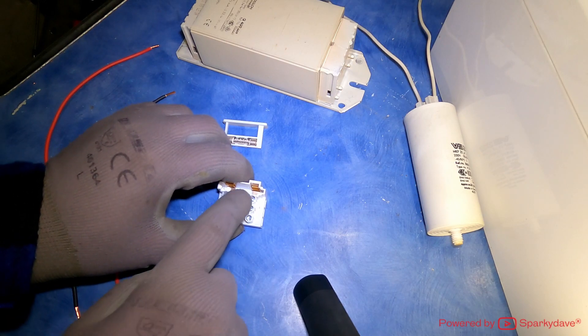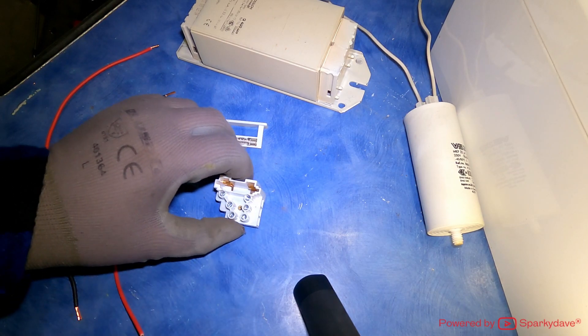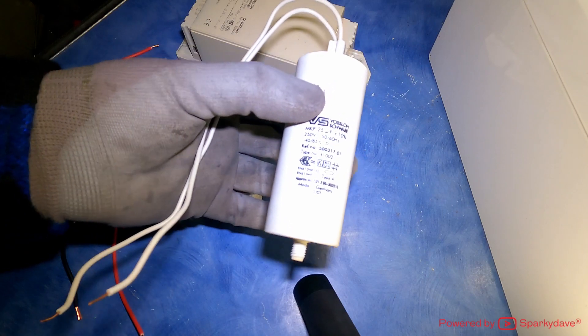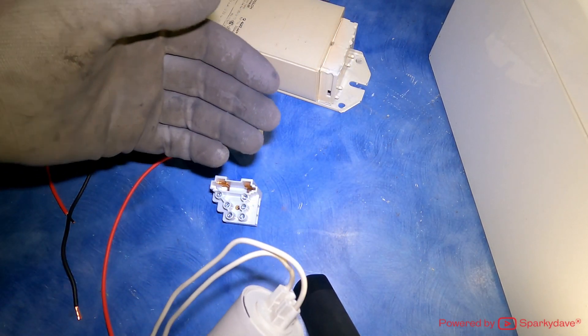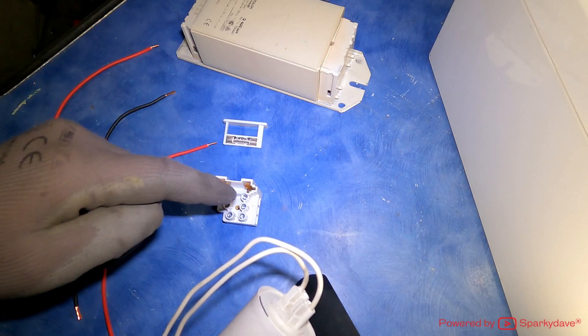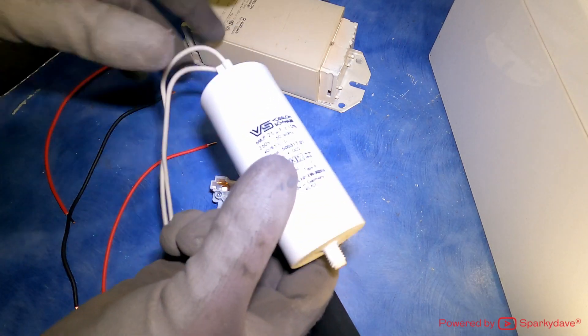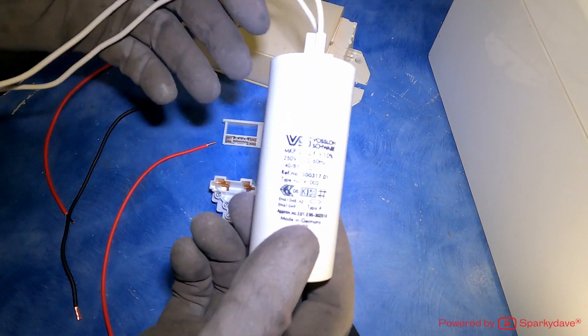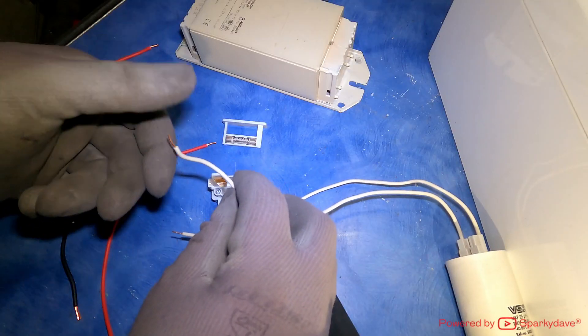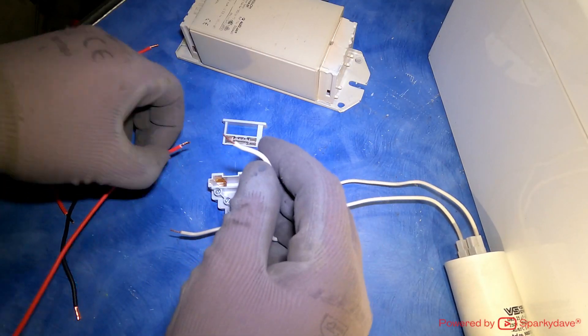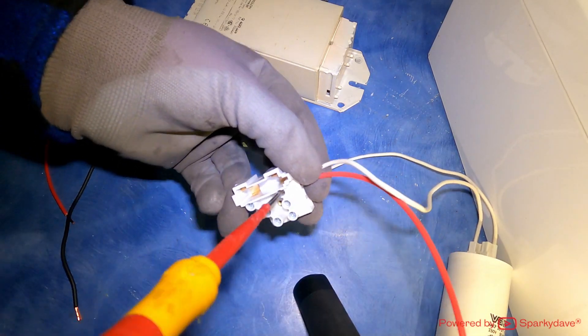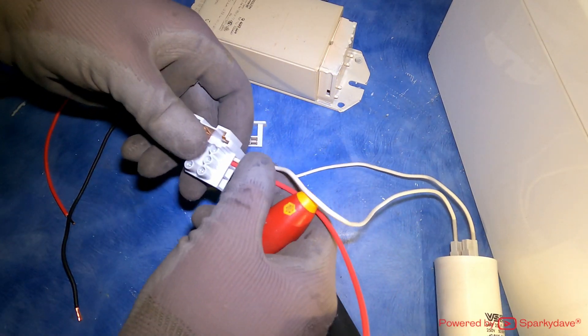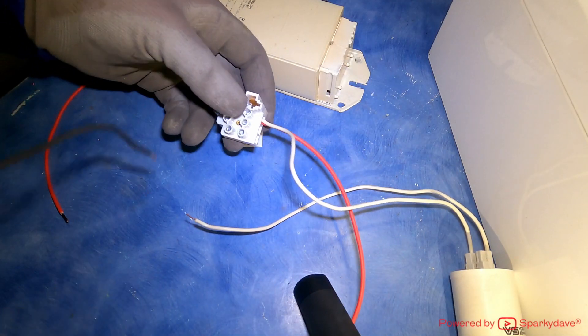Generally your capacitors are going to sit in parallel with the circuit. That means one end will be in the phase and one end will be in the neutral. So this capacitor can be fit off right at the start. One of the tails we're going to put in with our phase cable and screw them in together, and the other end goes with our neutral cable. So that is the capacitor in the circuit.